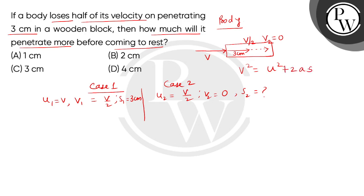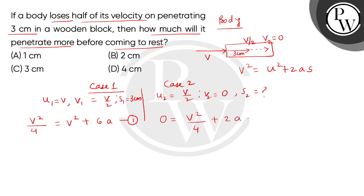Let's use the third kinematical equation: V² = U² + 2As, where A is constant acceleration. In Case 1: V²/4 = V² + 2A(3), which gives V²/4 = V² + 6A. Let this be equation number 1. In Case 2, applying the third kinematical equation: 0 = V²/4 + 2As₂. This is equation number 2.